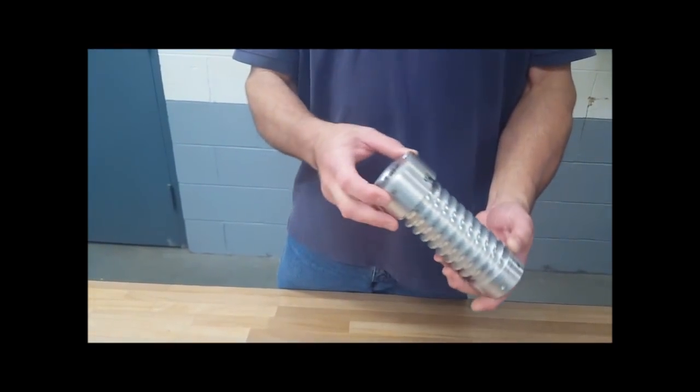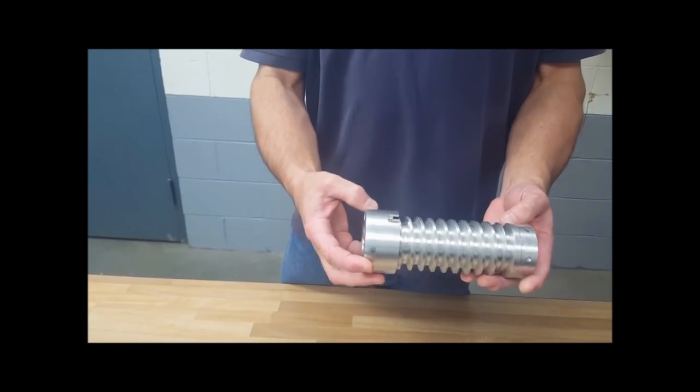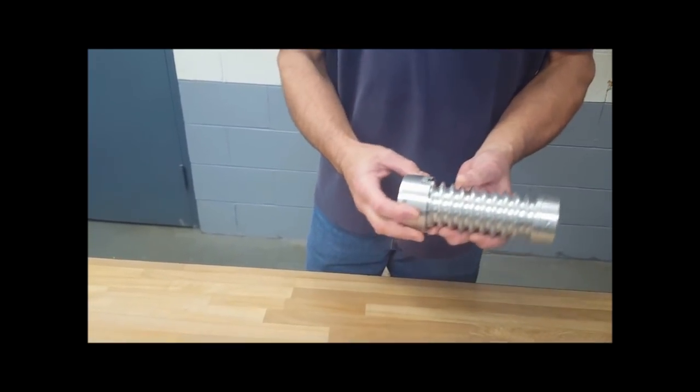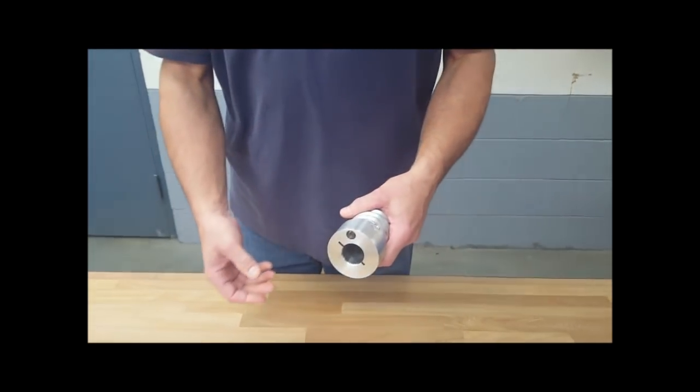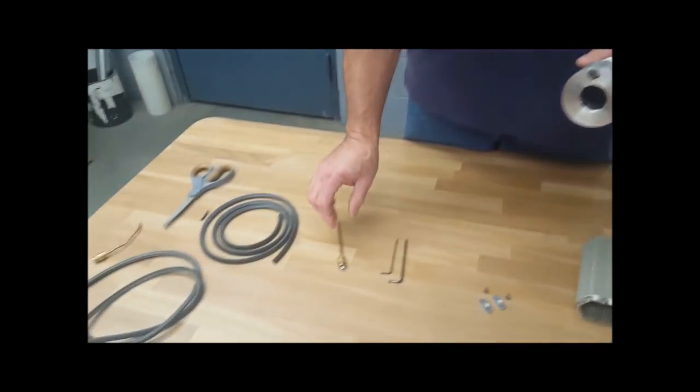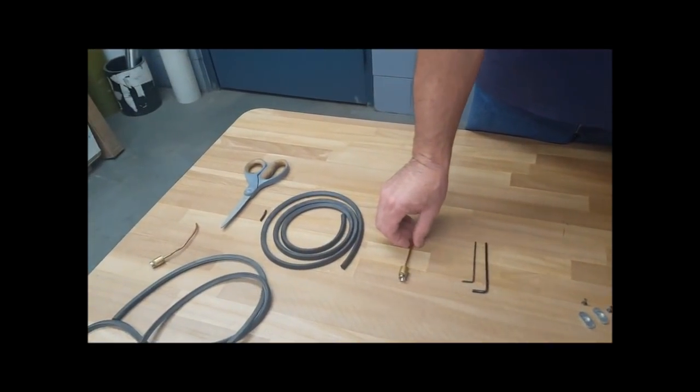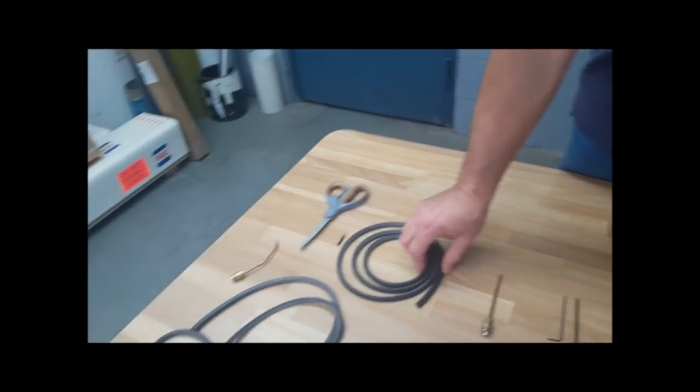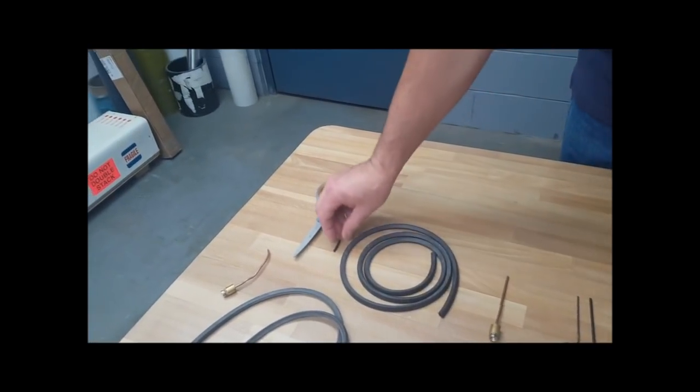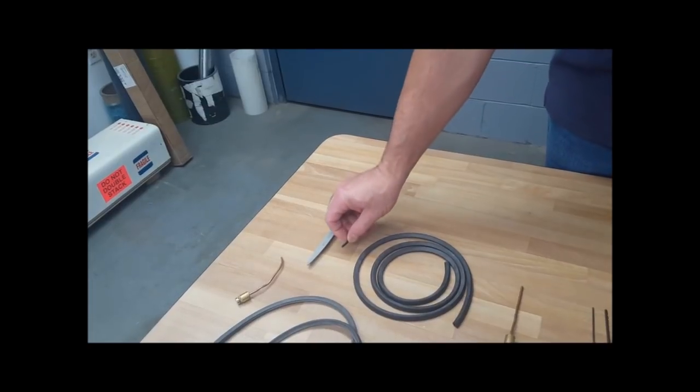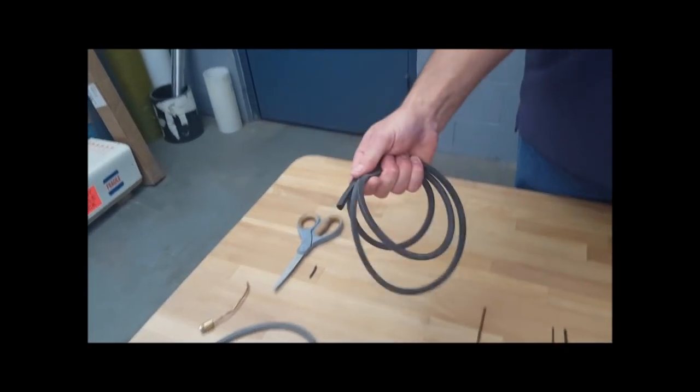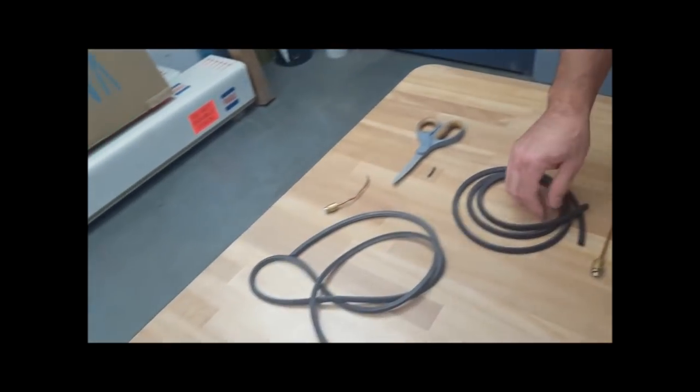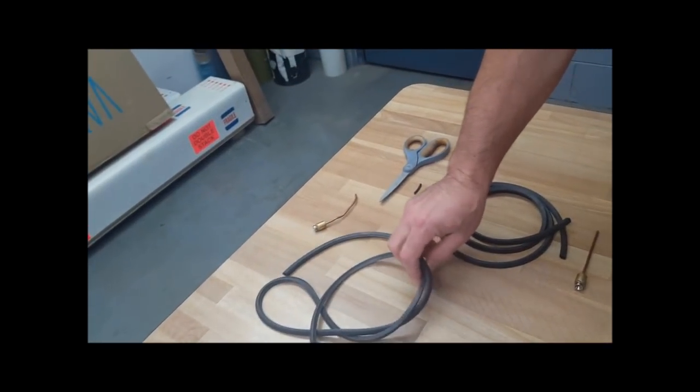Now your chuck is ready for the replacement parts. We're going to begin with the parts that we're going to be replacing: your valve, your inflating tube, and your end plug. The inflating tubing length is determined by your old length that you removed.